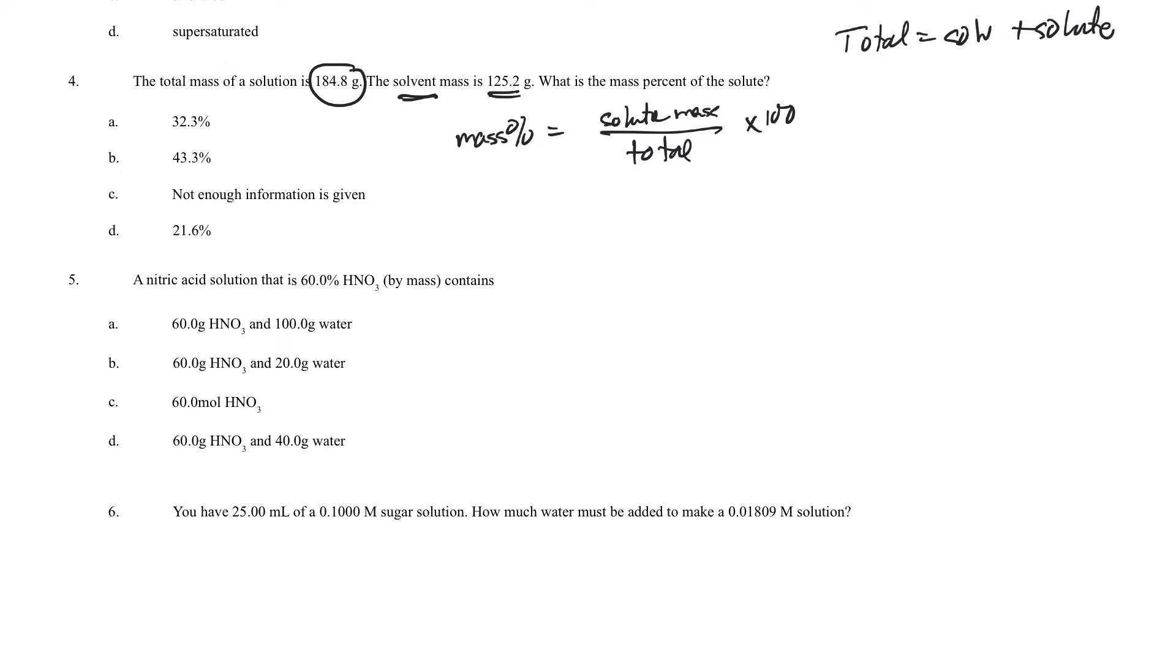So if they gave me the total is 184.8 and the solvent is 125.2, what I'll need to do is subtract those two, 125.2, to figure out how much solute is in the solution. And that's what I'm going to plug in right there.